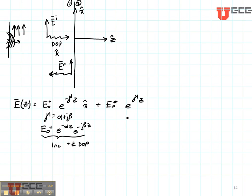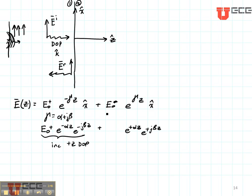That's going to give us E to the plus alpha Z, E to the plus J beta Z, and its polarization is also X polarized.